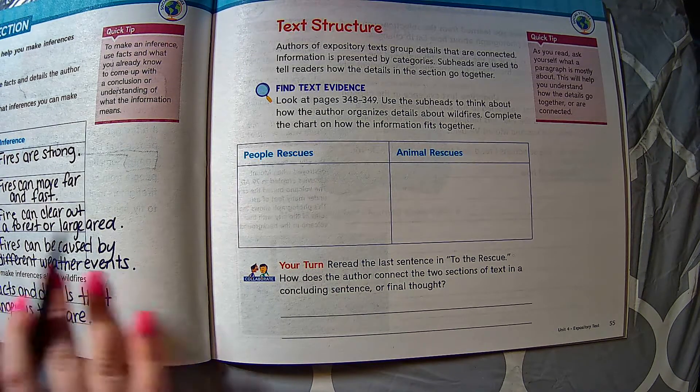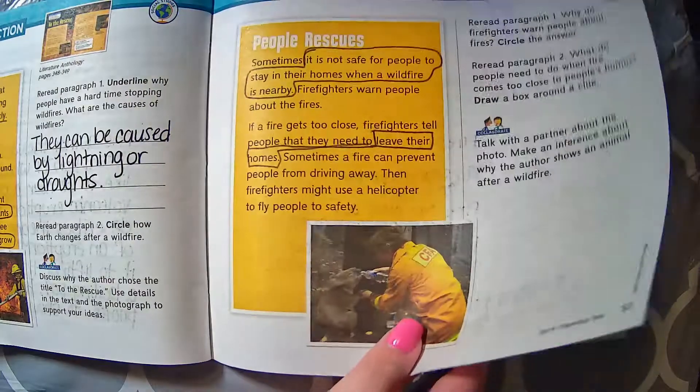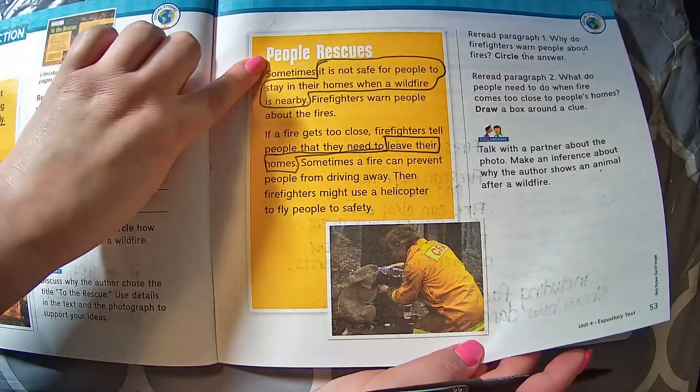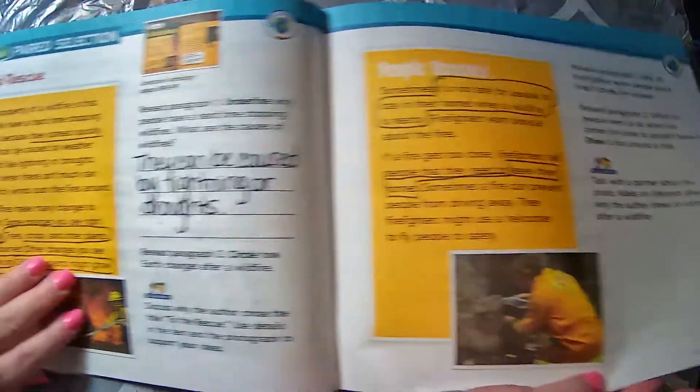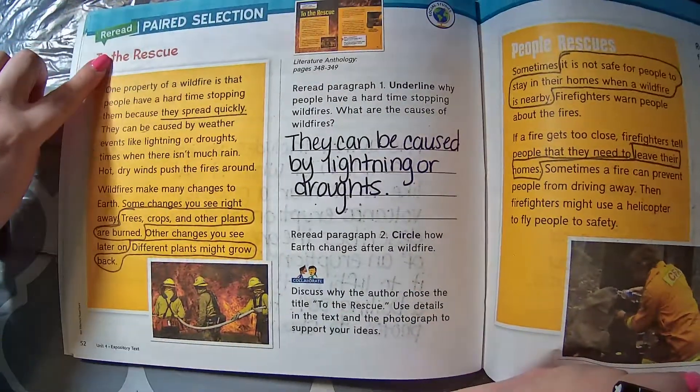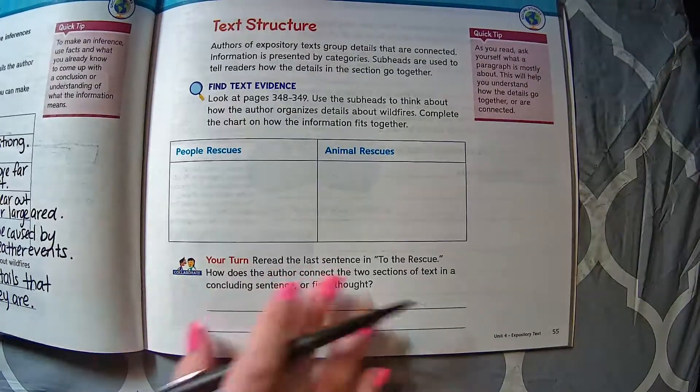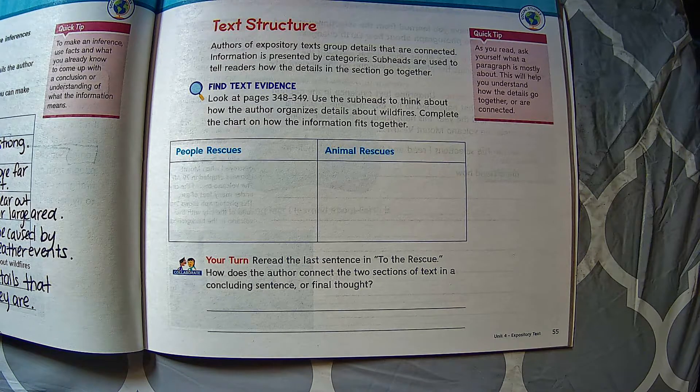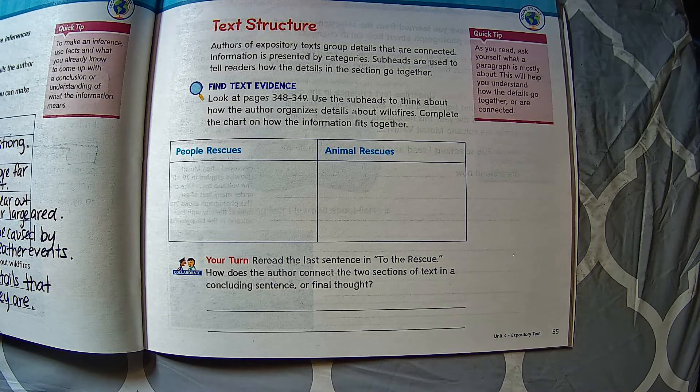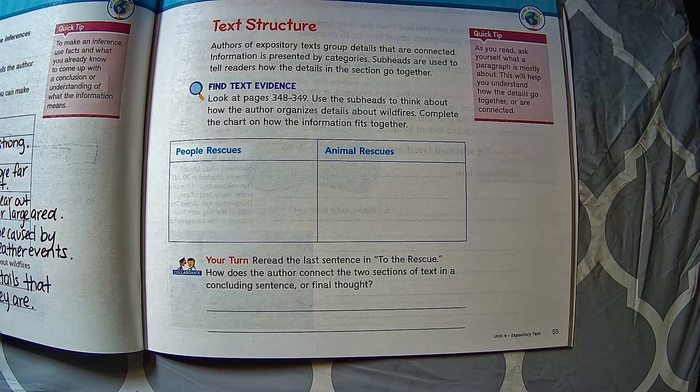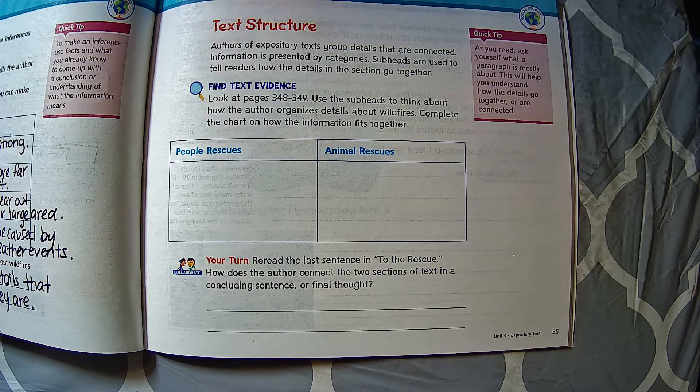In the story and back on our other pages here, we could see that we have headings for our section in our story To the Rescue. We're going to use that detail to answer our questions over here on page 55. We're going to use the subheads to think about how the author organizes details about wildfires to complete the chart on how the information fits together.